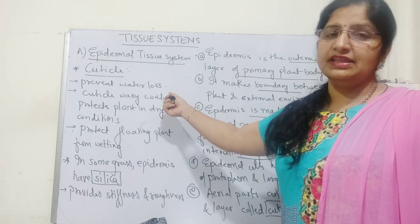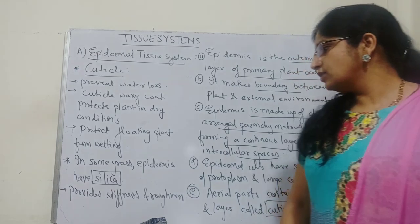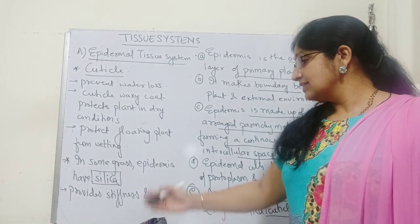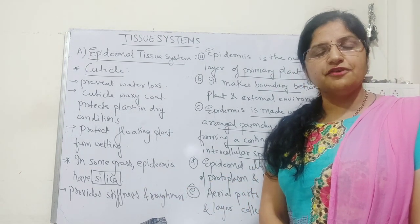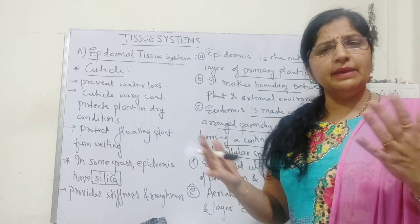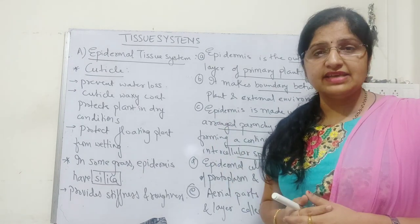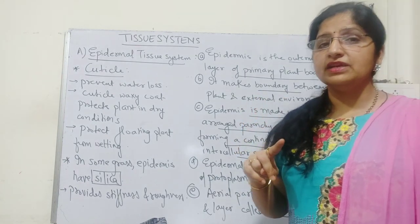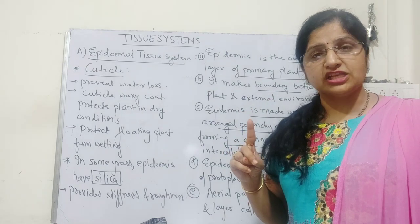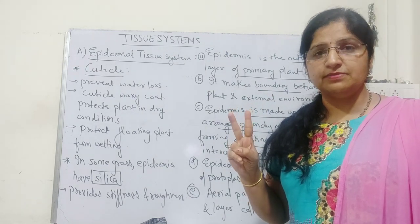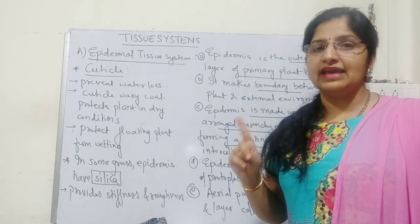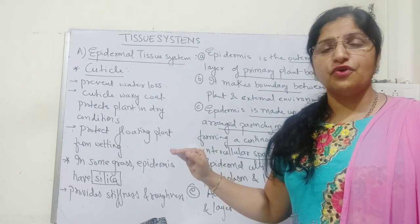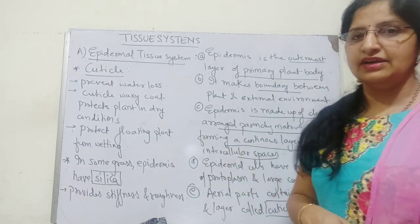Other than cutin deposition, some grasses also show the presence of silica on their epidermal cells. Silica provides stiffness and roughness to the epidermis lining and protects the grass from being grazed by herbivorous animals. So cutin on epidermis reduces the rate of transpiration, while silica on epidermis protects from grazing animals — silica deposits are characteristic of grasses, not all plants.